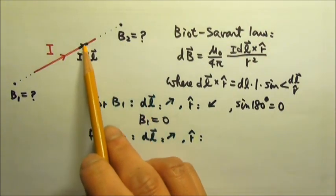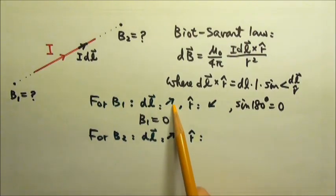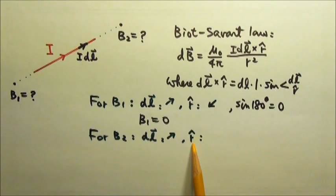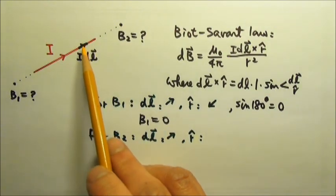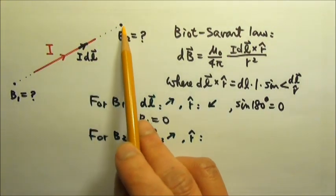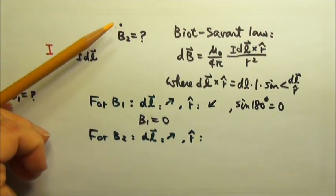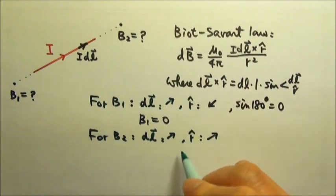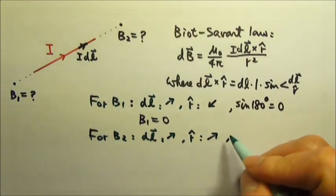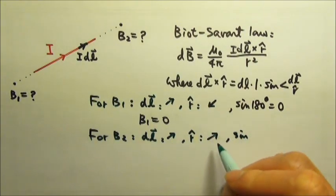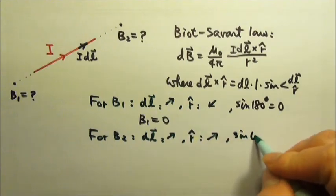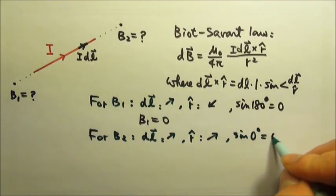For B2, the dl, of course, the unit vector r is still in the same direction as that. The unit vector r has the same direction as r, and r goes from the point source to the location we're interested in, so r goes that way. Same direction as dl, so the sine of the angle between those two would be sine zero degrees, which is zero.